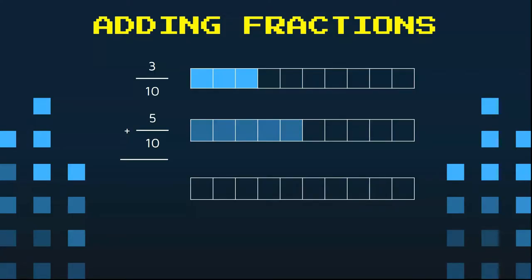In fact, both of them are cut into tenths. The first bar we have shaded three tenths. In the second bar, we have shaded five tenths. We want to add those together.